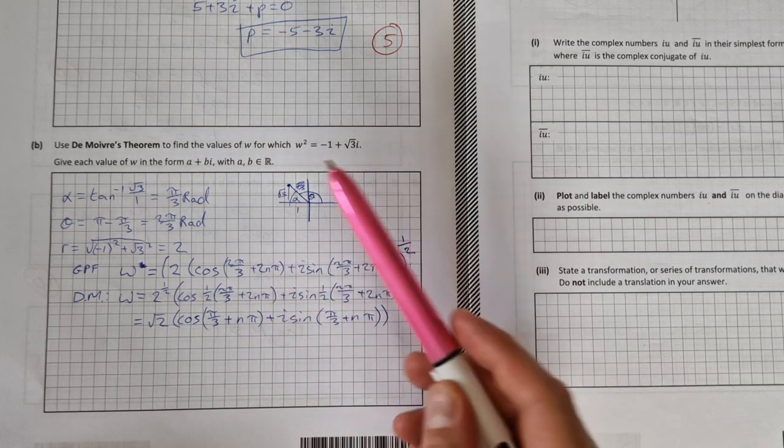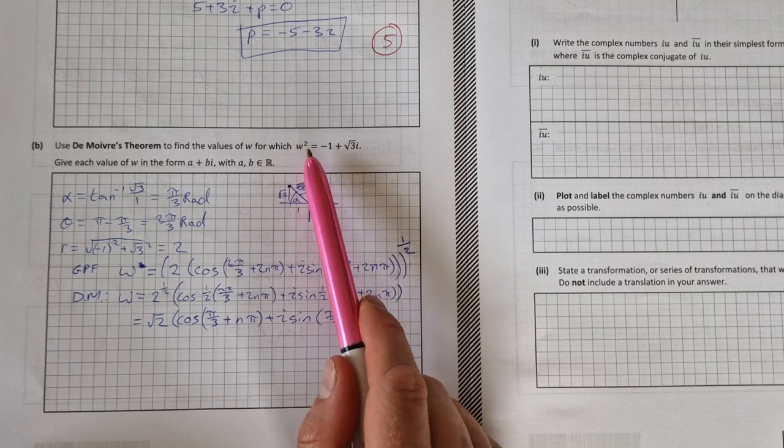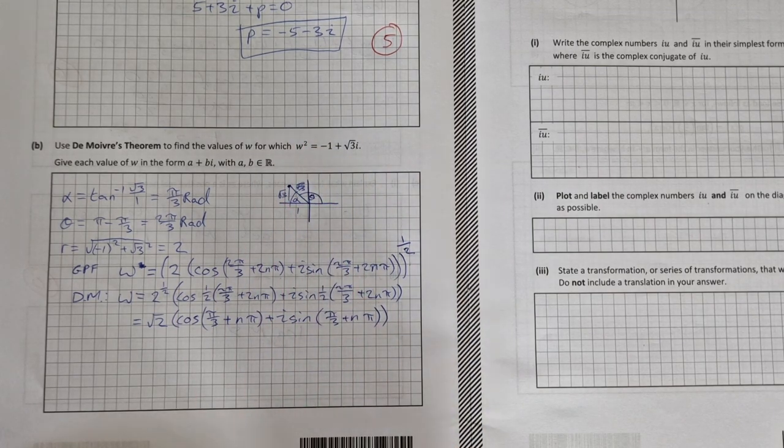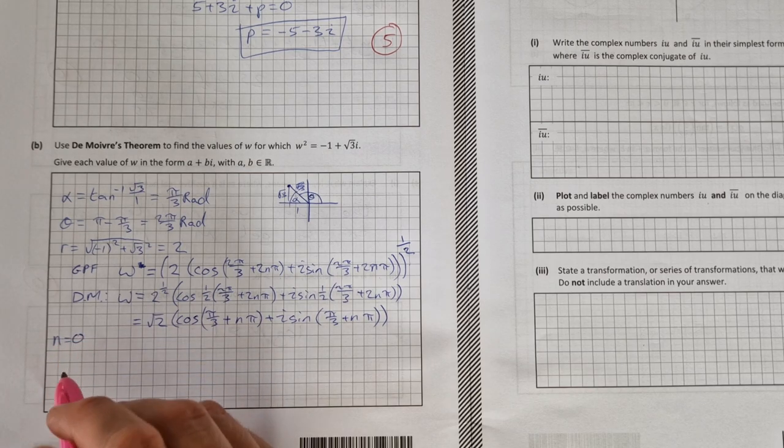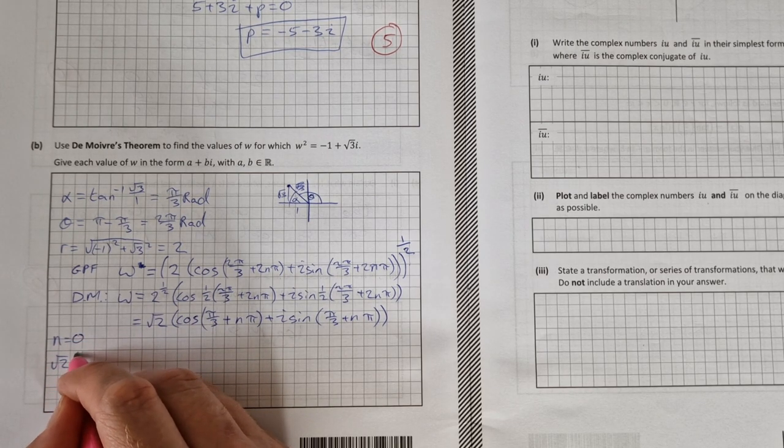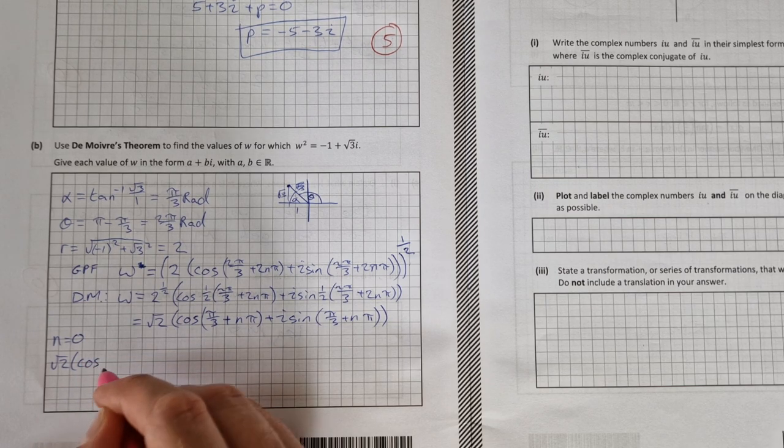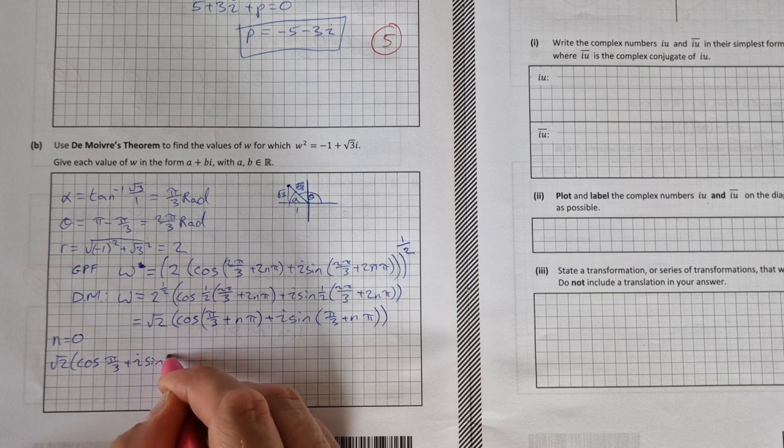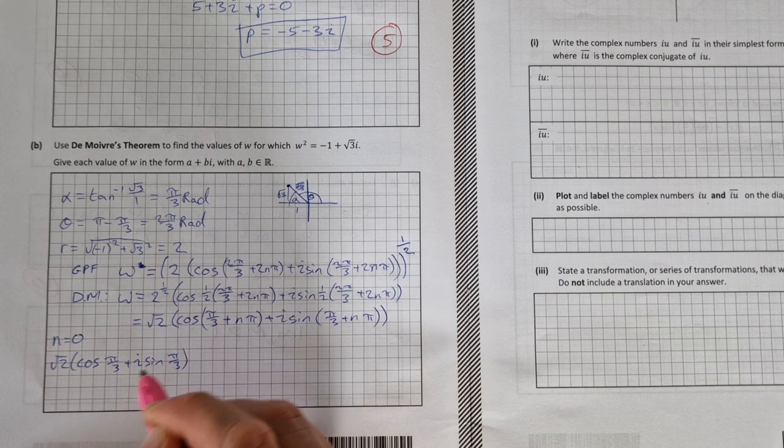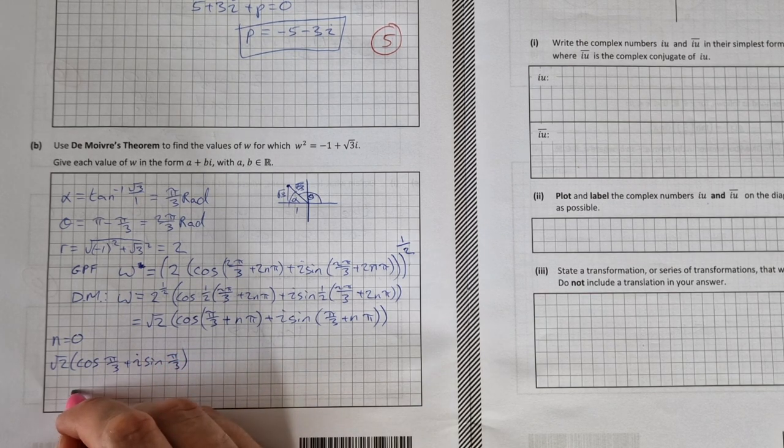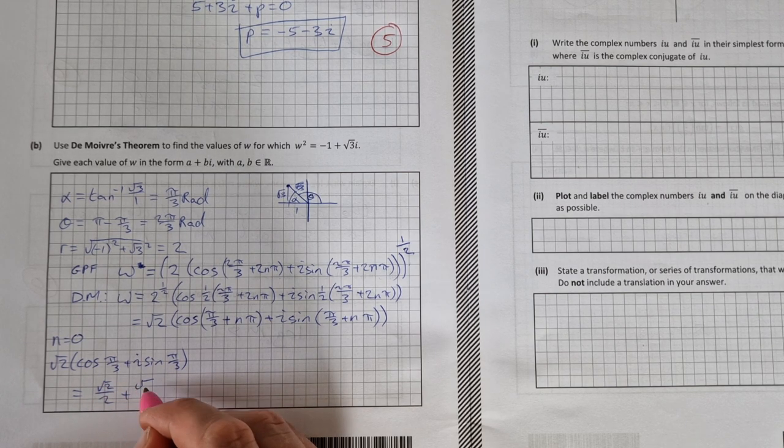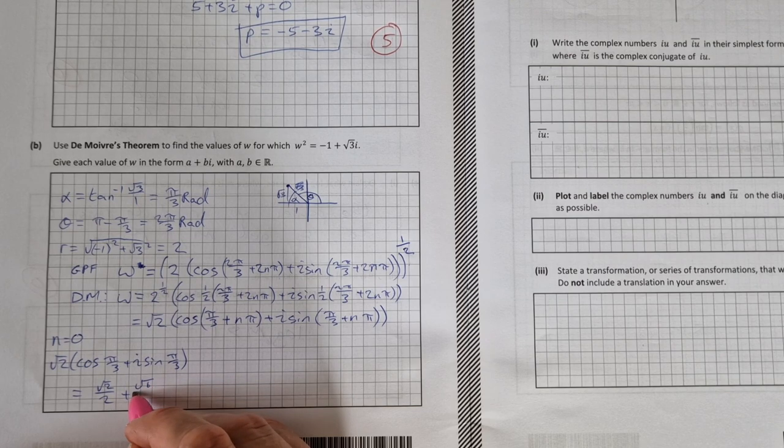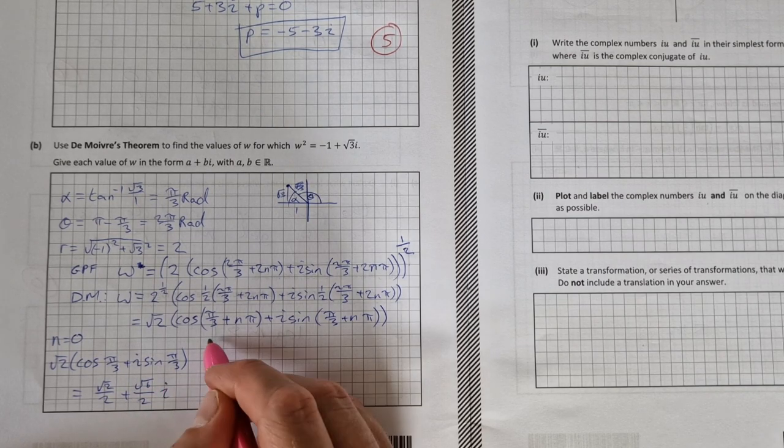Now it's a quadratic, it has a square in it, so I have two values of n to input: n equals 0 and n equals 1. We'll do n equals 0 here. That would be root 2 times cos of pi over 3 plus i sine pi over 3. And that would equal root 2 over 2 plus root 6 over 2 i. That's the first one.